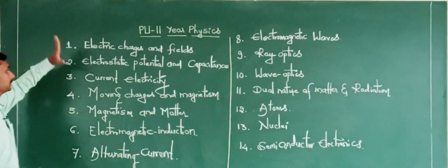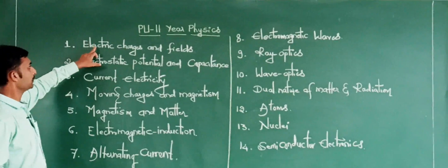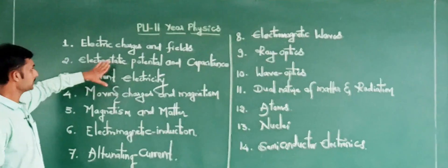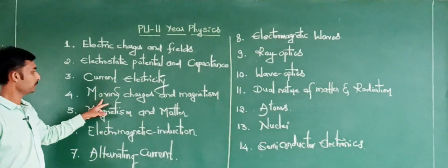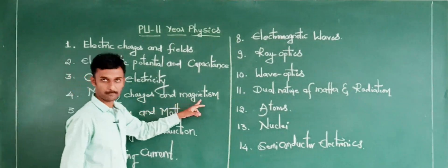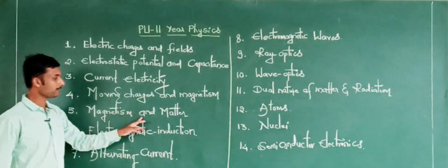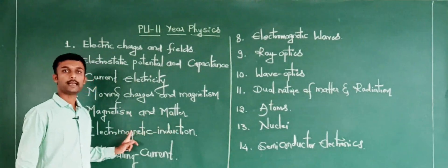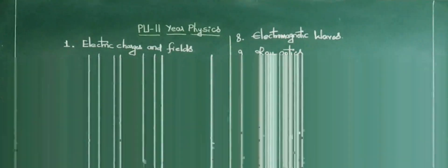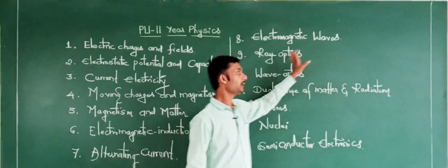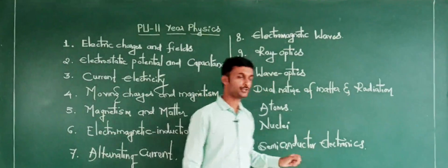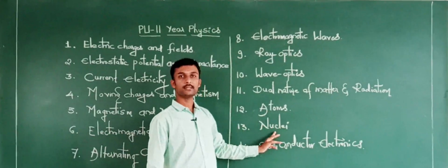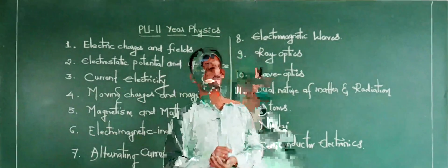This is all about the PUC second year physics syllabus — the names of the fourteen topics: electric charges and fields, electrostatic potential and capacitance, current electricity, moving charges and magnetism, magnetism and matter, electromagnetic induction, alternating current, electromagnetic waves, ray optics, wave optics, dual nature of matter and radiation, atoms, nuclei, and semiconductor electronics.